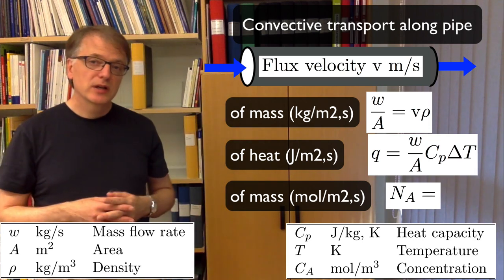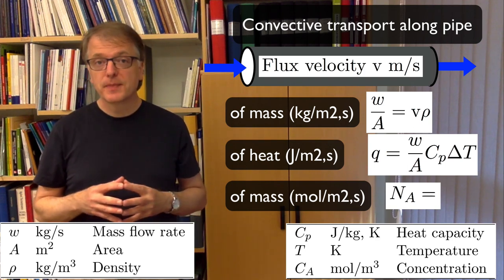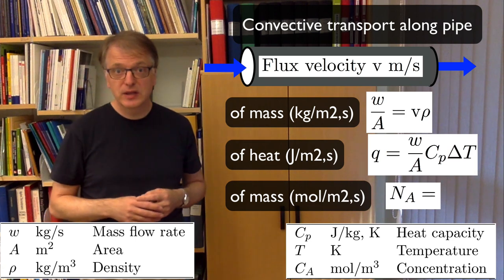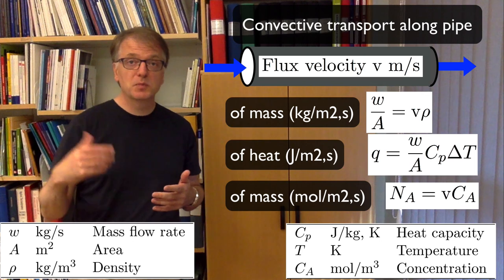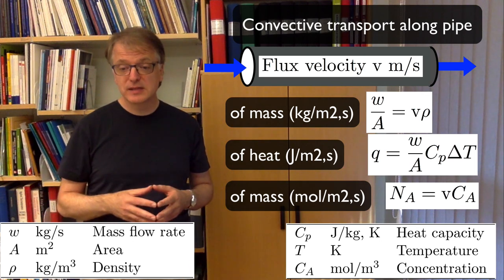So what about mass transfer expressed as mole per square meter per second? Well, you can do that in different ways, but one way to do it is to take the velocity times the concentration. So meters per second times mole per cubic meter, that becomes mole per square meter per second. So that was convection. What about diffusion?